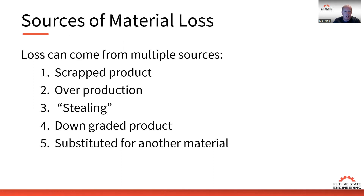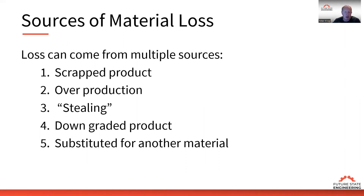Another source of material loss is stealing — not employees taking material home, but allocating material dedicated for one product and reallocating it to another product to increase batch size, which contributes to overproduction. Another way is downgrading a product: we have constrained material, produce something that doesn't meet specifications, and downgrade it to a lesser value product. Finally, we can substitute the constrained material for use in another product, which is another huge loss for the organization.